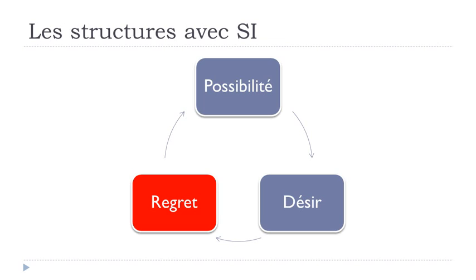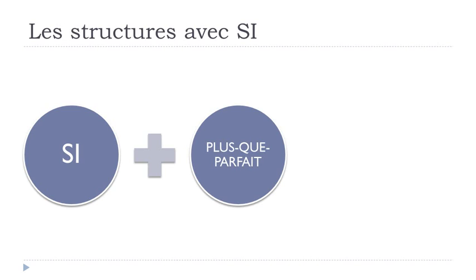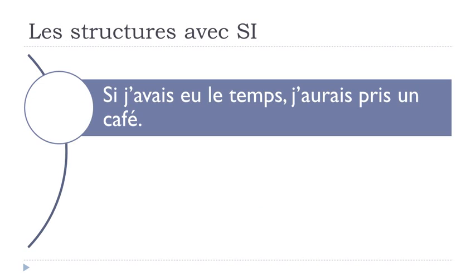The last one: LE REGRET. If we want to express regret, we use SI followed by LE PLUS-QUE-PARFAIT, then CONDITIONNEL PASSÉ. This structure is for when you regret something — it's over, in the past, impossible to change. Example: SI J'AVAIS EU LE TEMPS — AVOIR at the PLUS-QUE-PARFAIT form — J'AURAIS PRIS UN CAFÉ. PRENDRE at the CONDITIONNEL PASSÉ form: 'If I had had the time, I would have had a coffee.'